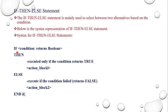Next is the IF-THEN-ELSE statement, which is similar to C language. It is used to select between two alternatives based on the condition. The syntax is: IF condition returns boolean THEN execute action block 1, ELSE — executed if condition returns false — execute action block 2, END IF. This is the simple syntax for the IF-THEN-ELSE statement.